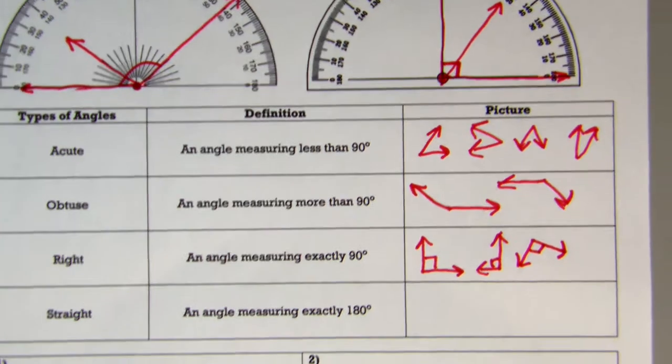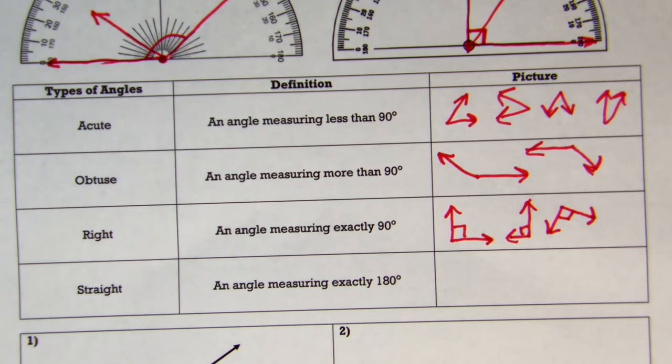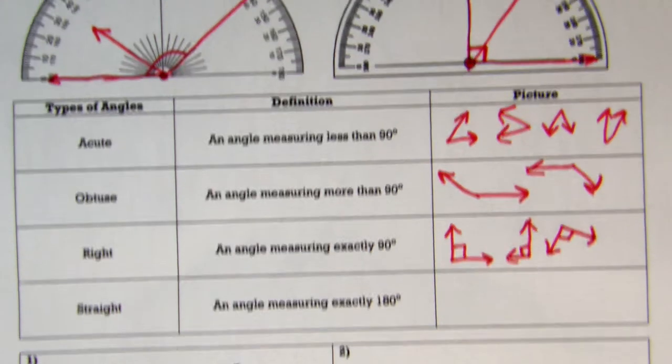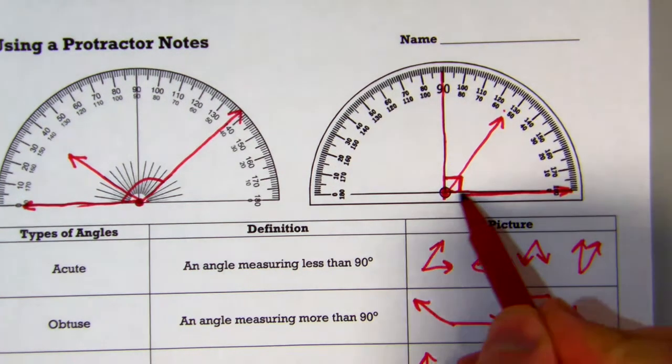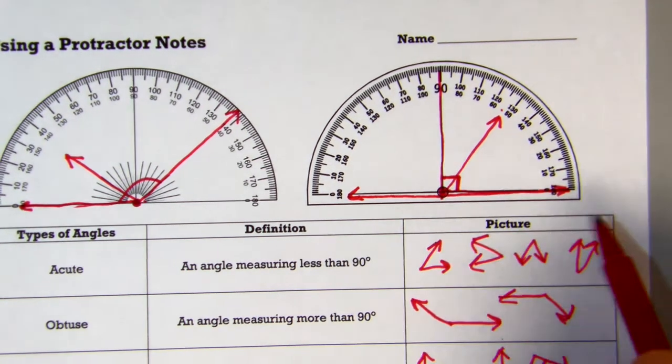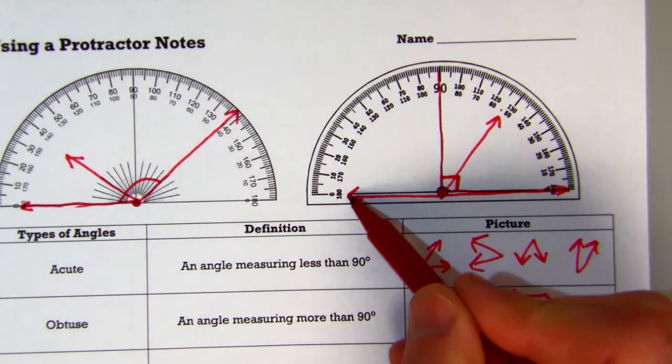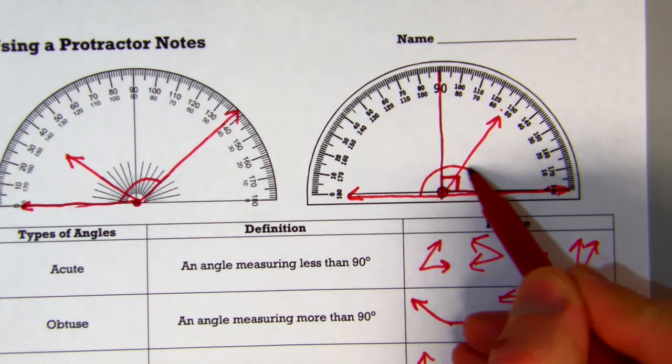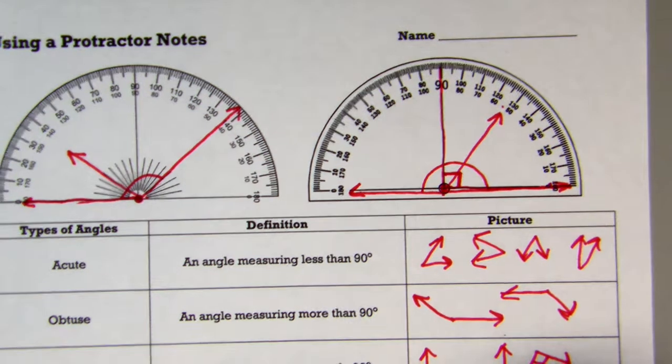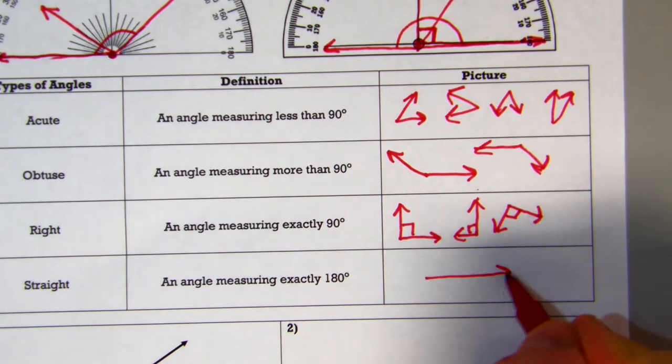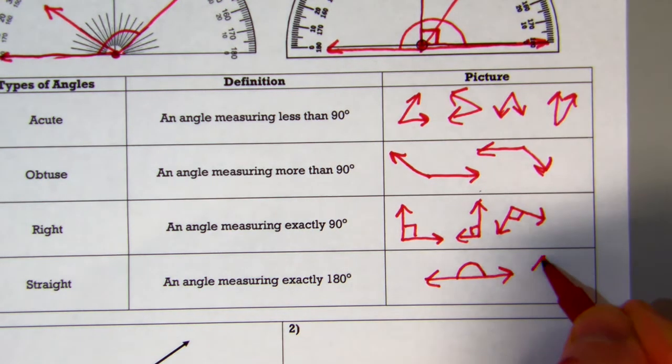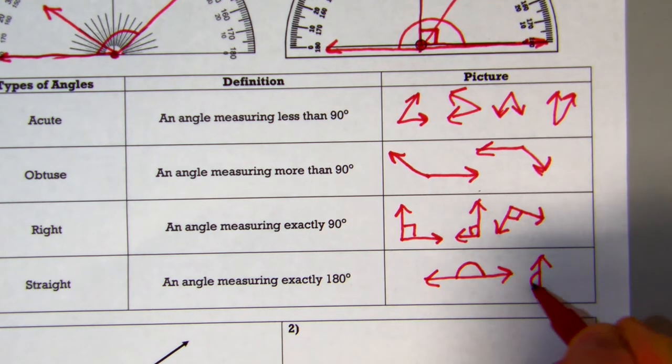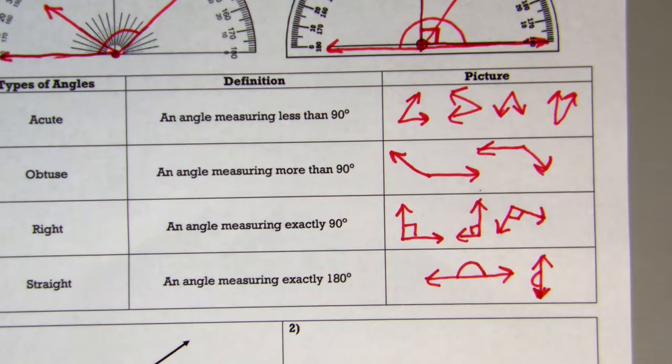And then your last one is your straight angle. Straight angle is an angle that measures exactly 180 degrees. So if we look at our protractors up here, if we have a line that just goes straight across, meaning we go from zero all the way over to 180, it's just 180 degrees. So a straight line is 180 degrees. And again that line can be pointed in any direction you want it to be.